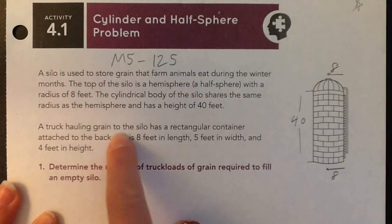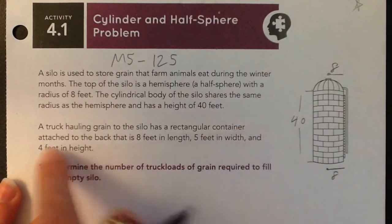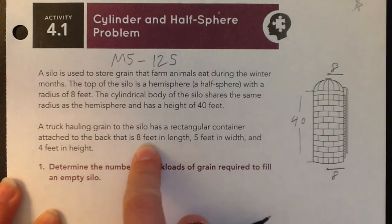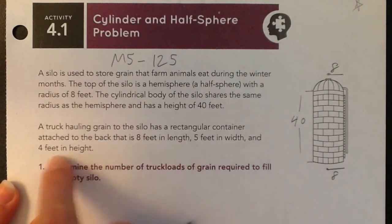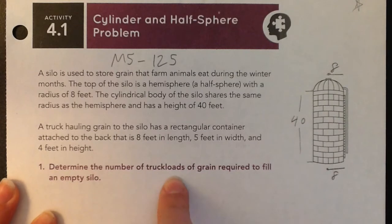A truck hauling grain to the silo has a rectangular container attached to the back that is 8 feet in length, 5 feet in width, and 4 feet in height. Determine the number of truckloads of grain required to fill the empty silo.